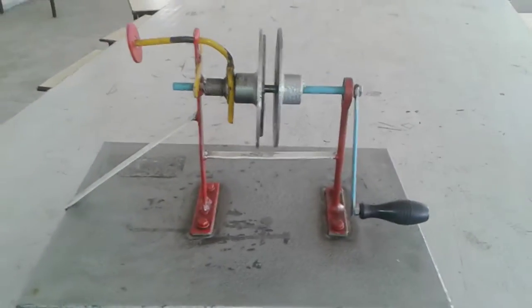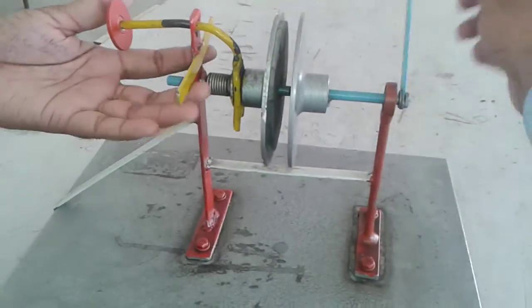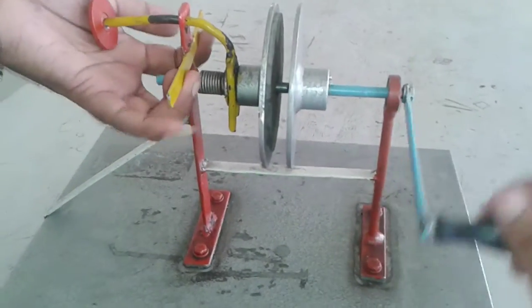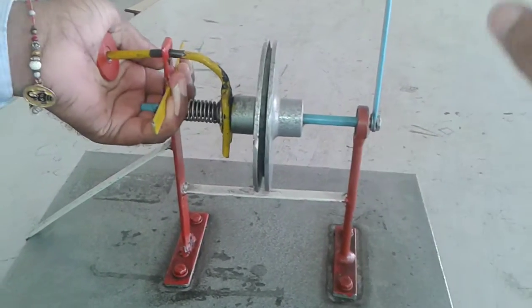Here we can see the working of this particular brake. This is the rotating drum, and when we give motion to it, it starts to rotate. Applying the lever will stop it.